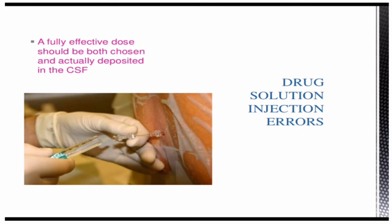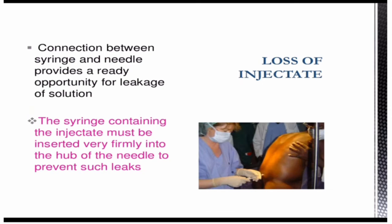The whole dose must be delivered into the CSF, including the dead space of the needle. There is a chance of leakage at the connection between the syringe and the needle hub, so the syringe containing the local anesthetic must be inserted very firmly into the hub of the needle to prevent such leaks.